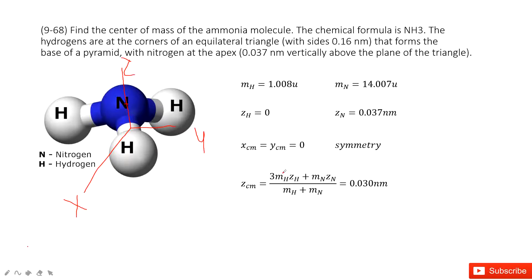We consider the center of mass formula. We have three hydrogen atoms times zh plus one nitrogen atom times zn, divided by total mass—that's three times the mass of hydrogen plus the mass of nitrogen. Finally, we get the final answer. Thank you.